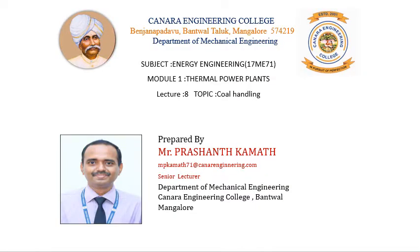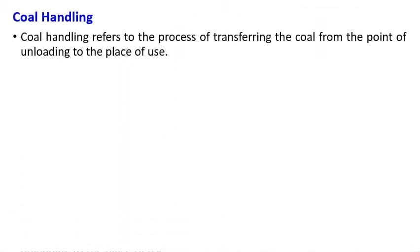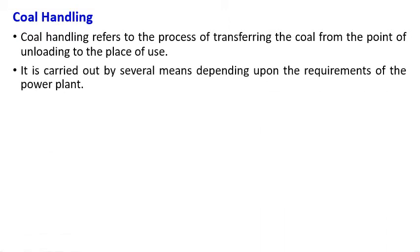In this session, let us understand and study what is coal handling system that is adopted in thermal power plants. The coal handling refers to the process of transferring the coal from the point of unloading to the place of use. I have coal yards and coal mines from that point, I have to get the coal to site, from the site I have to take it up to the furnace or boiler. That is called as a coal handling system, carried out by several means depending upon the requirement of the power plant.